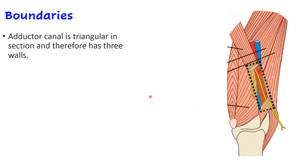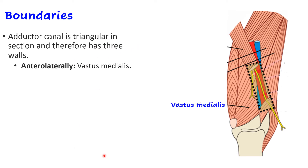Let us look at the boundaries of the adductor canal. When you see a cross-section, it is triangular in nature, so it has three walls. Anterolaterally, the wall is formed by vastus medialis. Looking at the cross-section diagram, this dotted line represents the adductor canal, and vastus medialis forms the anterolateral aspect.